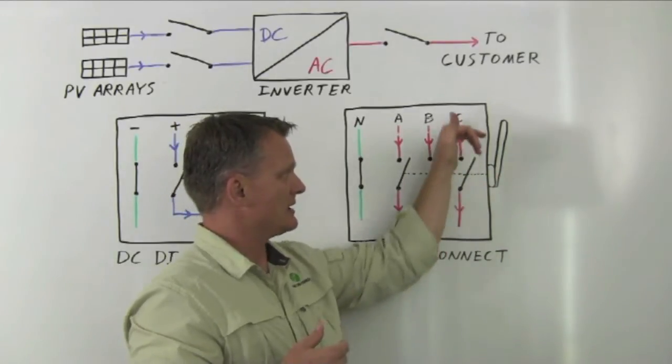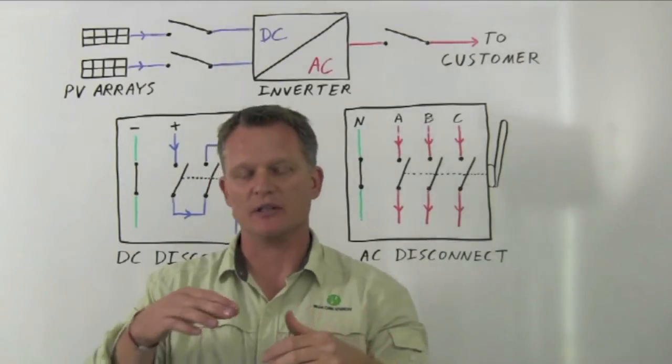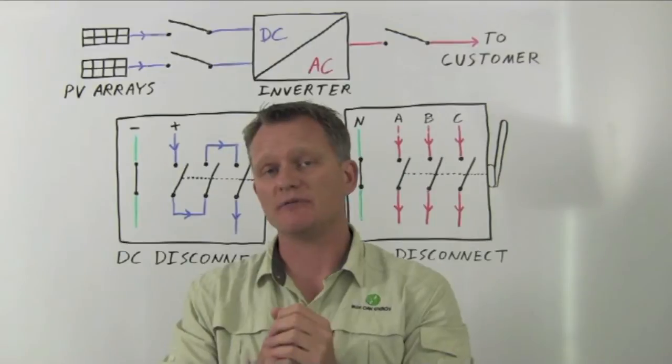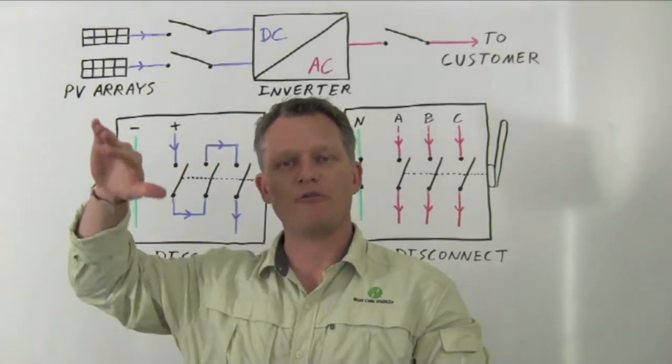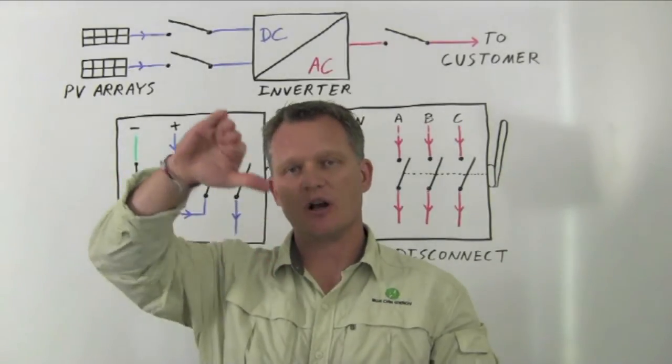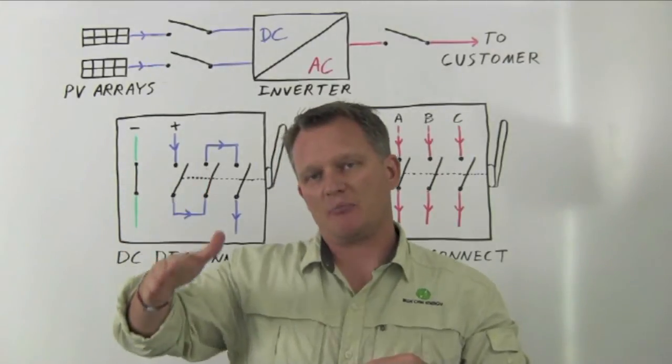And there's an arc formed between each of these switch legs and these contacts. Now, in an AC current situation, those arcs extinguish very quickly on their own. The reason for that is the cyclic behavior of alternating current. We're all familiar with the sine wave, right?